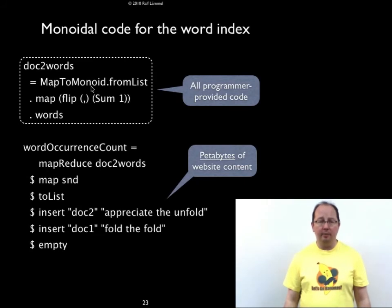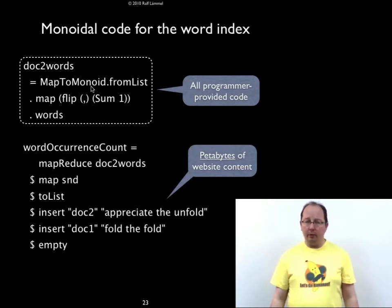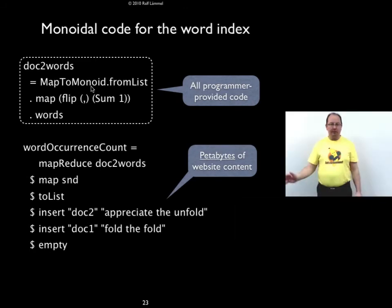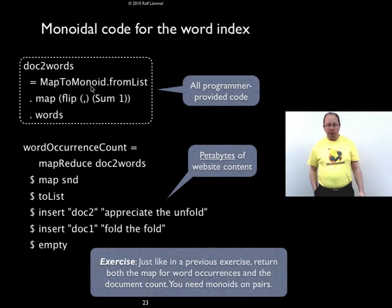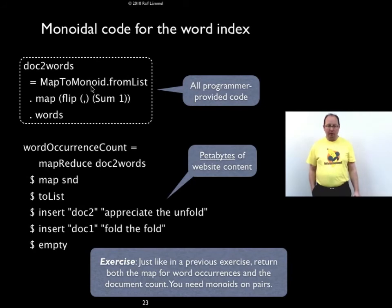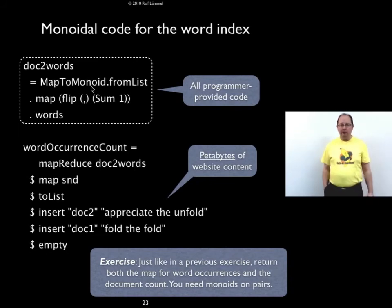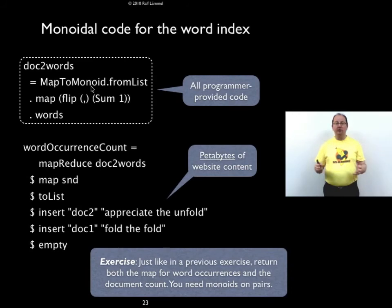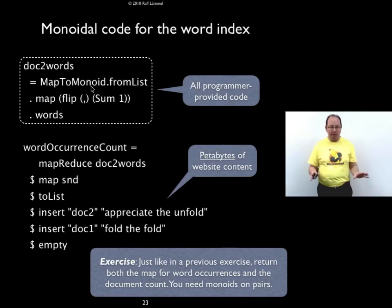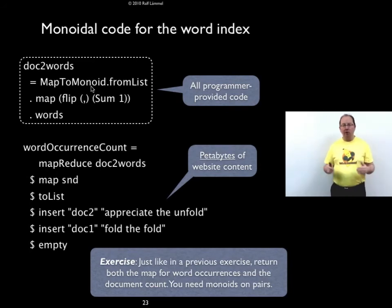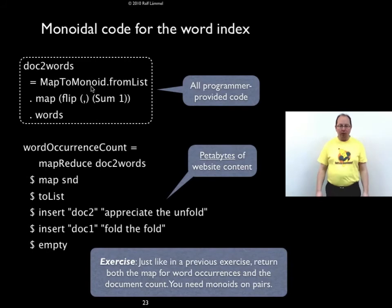Here's an exercise: we want to combine the word index computation with counting the number of documents. This was difficult with the previous MapReduce specification. With the monoidal model it's easy: whenever you have to perform two such computations, you can just use the monoid of pairs. Please try to work out this solution and figure out how monoidal pairs work.